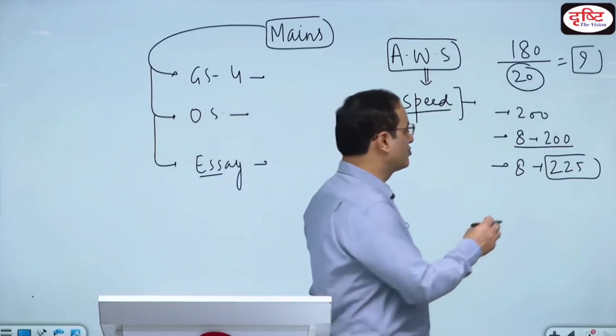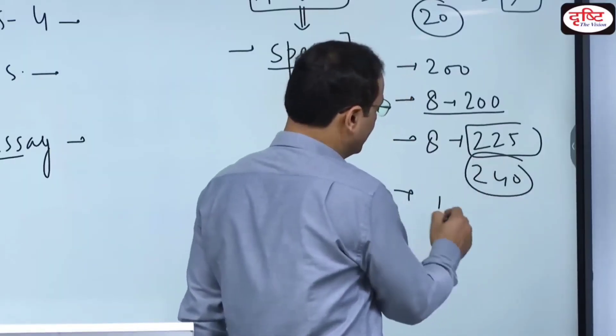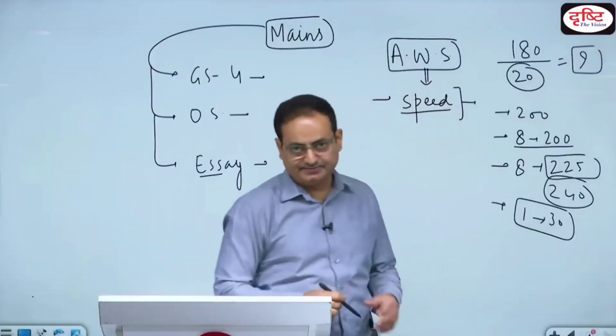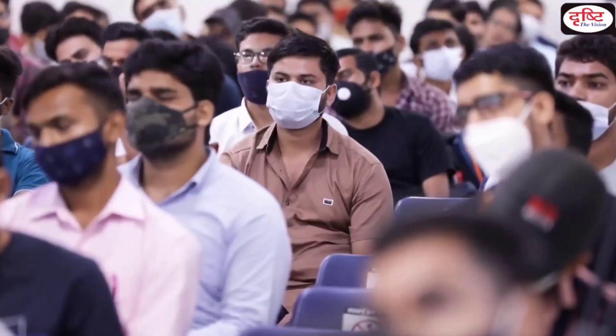If I do 240 words in 8 minutes, you need to write 30 words per minute. How simple is it? You need to write 30 words in a minute. So simple.